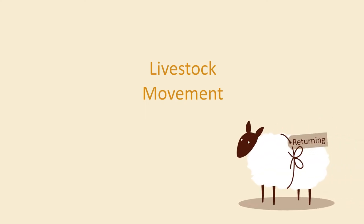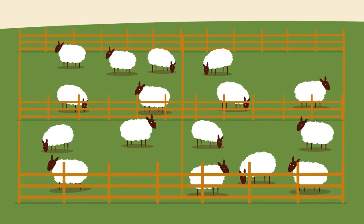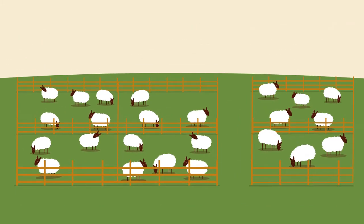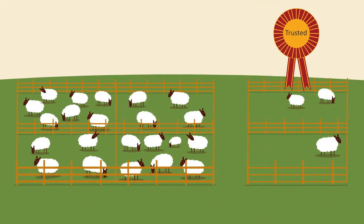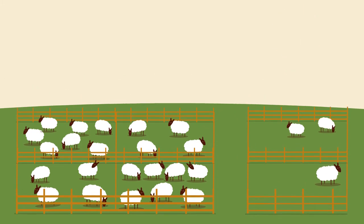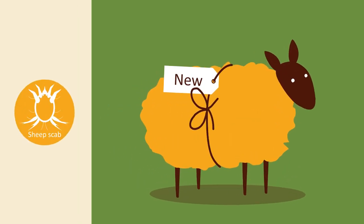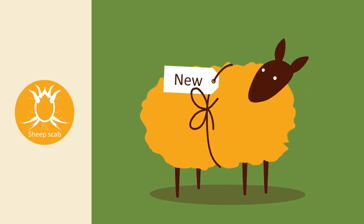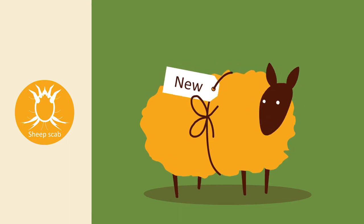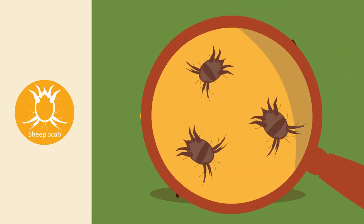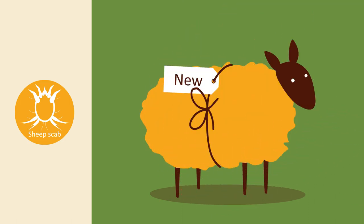Livestock movement is the most likely way to introduce disease onto your farm. In an ideal world, you would run a closed flock, but failing this, buy replacement stock from accredited or trusted sources. It's sensible to always check the disease status of any newly purchased or returning animals, even if it's just from the local show. It's vital to be aware that infested sheep may not show any clinical signs for weeks or even months after infestation.